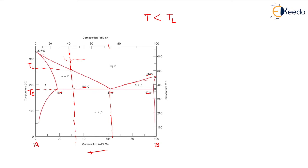Above the liquidus line, everything is hot and liquid. Now, if we drop the temperature just below Tl, what is going to happen? If we drop the temperature just slightly below Tl, alpha is going to nucleate.